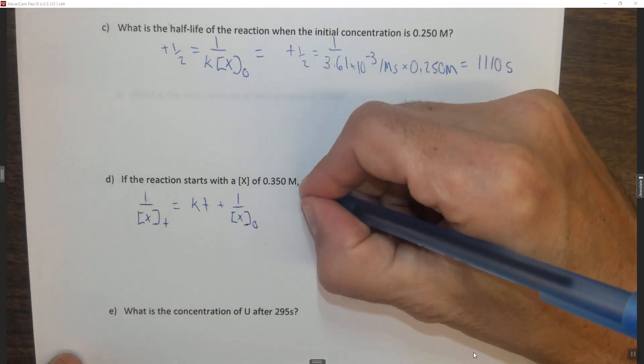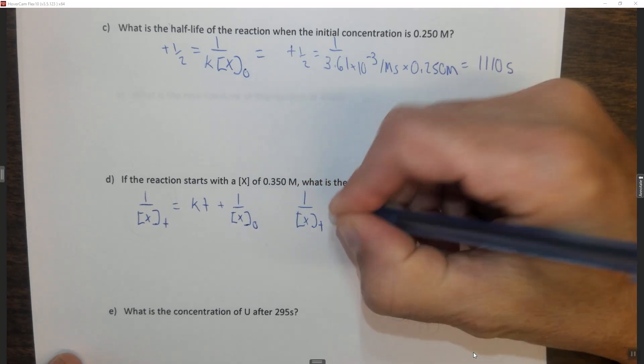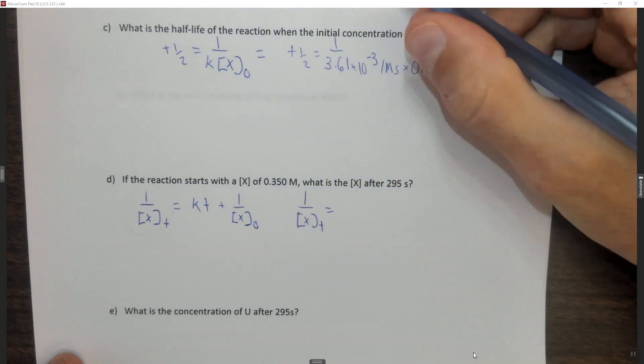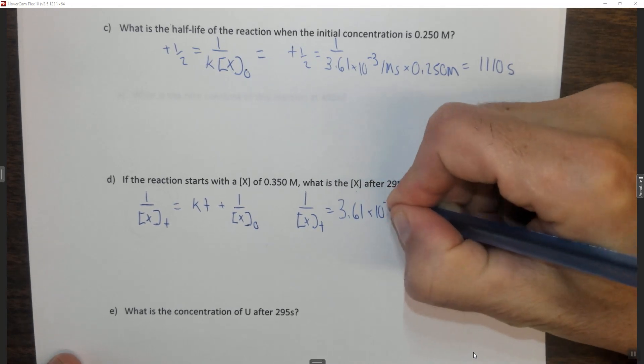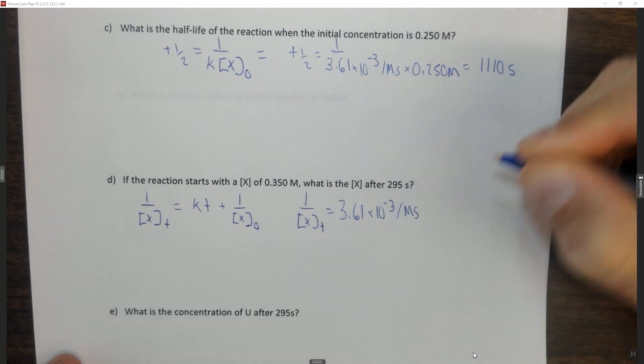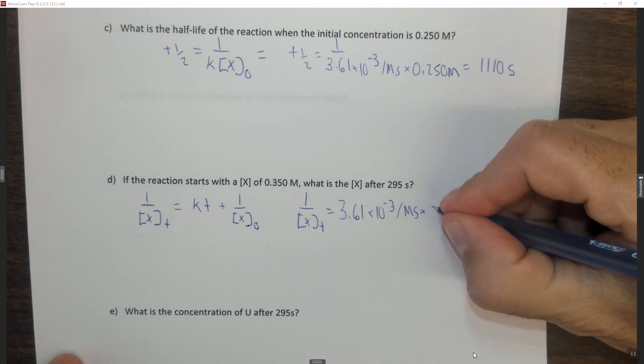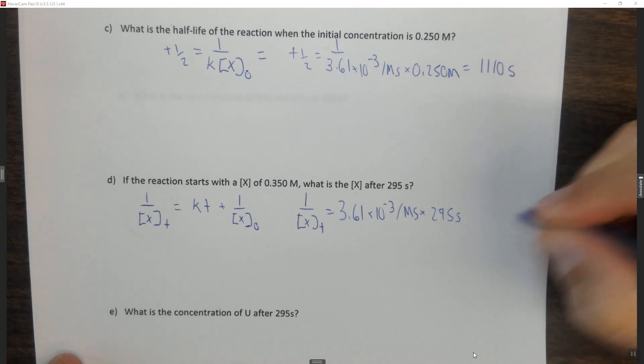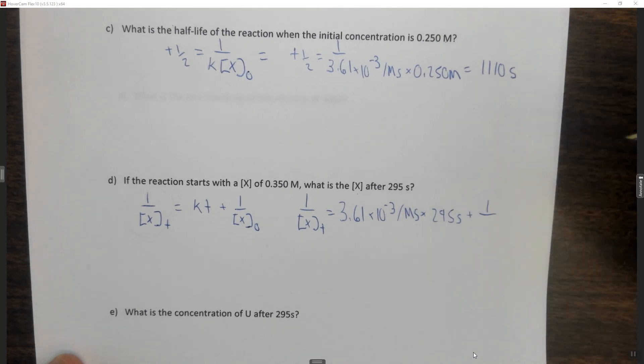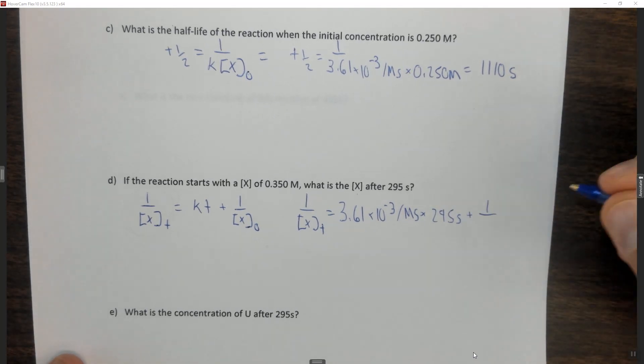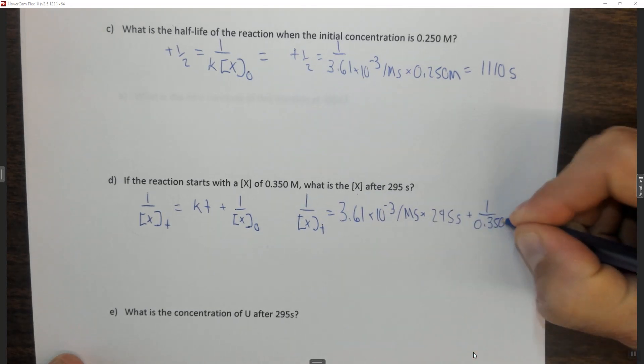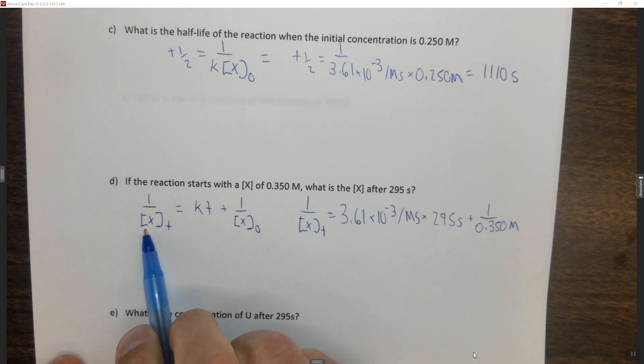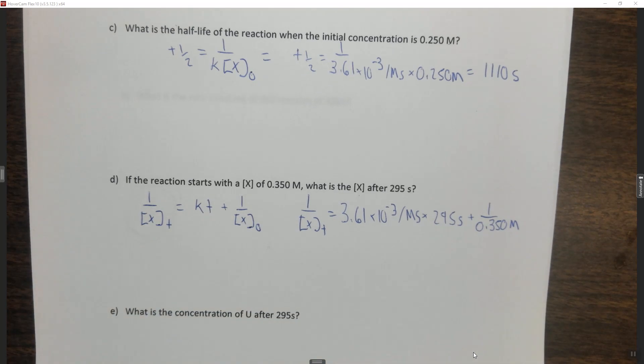So 1 over the concentration of X at some t is equal to k, which is the slope of the line, 3.61 × 10⁻³ per molar second, times t, and the t is 295 seconds, plus 1 over the initial concentration of X, which is 0.350 molar. And I apologize, I may have said A here instead of X. It's just this particular one happens to be X as the reactant.